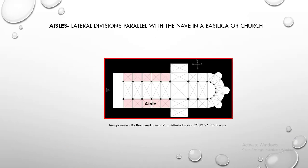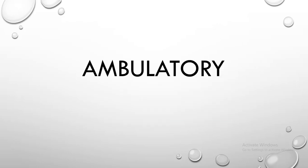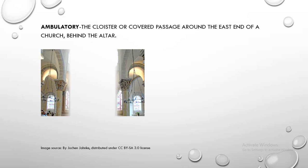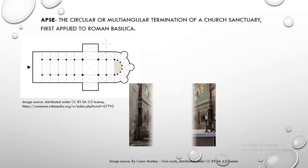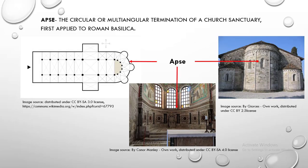Aisles. Aisles are the lateral divisions parallel with the nave in a basilica or church. Ambulatory. Ambulatory is the cloister or covered passage around the east end of a church, behind the altar. Apse. Apse is the circular or multi-angular termination of a church sanctuary, first applied to Roman basilica.